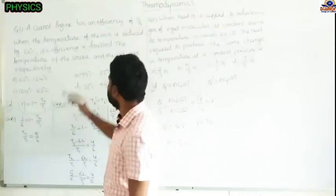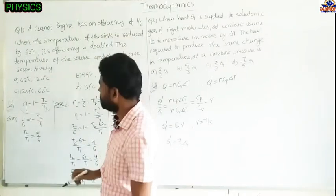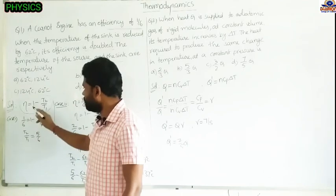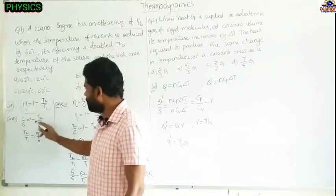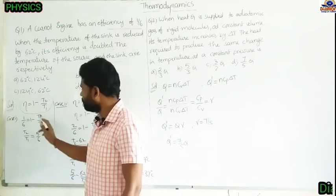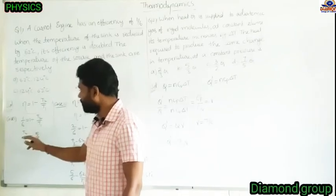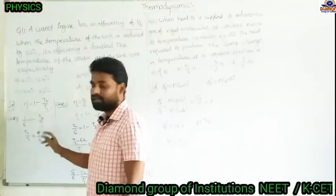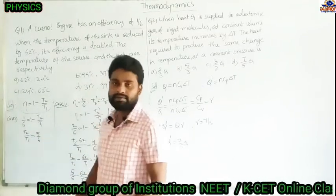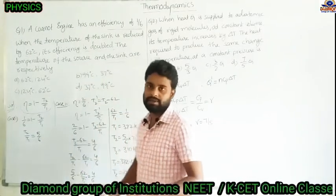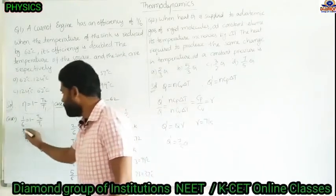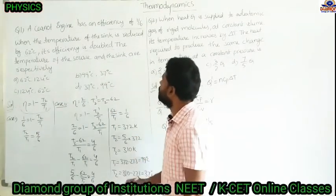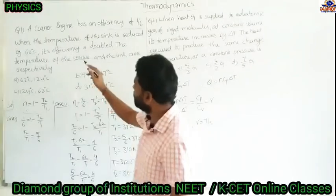Initially, the given efficiency of the Carnot engine is 1/6. So: 1/6 = 1 − T₂/T₁, which gives T₂/T₁ = 1 − 1/6 = 5/6. Keep this value.